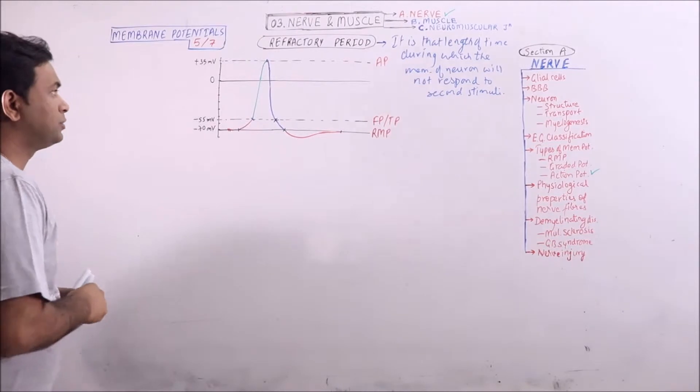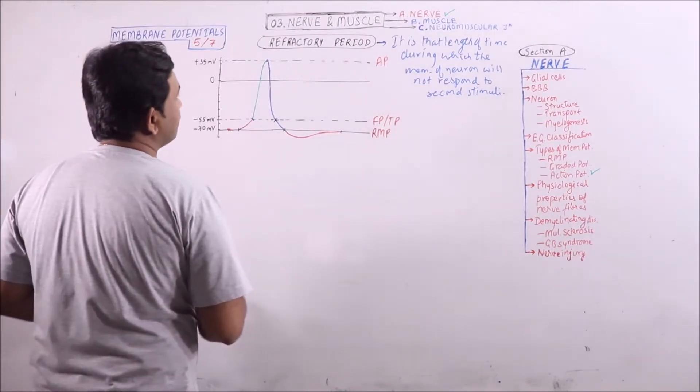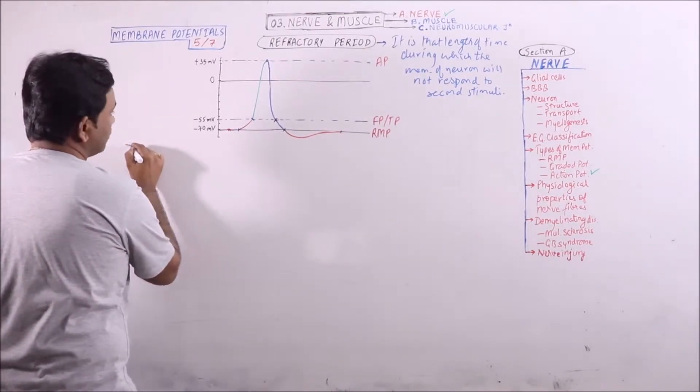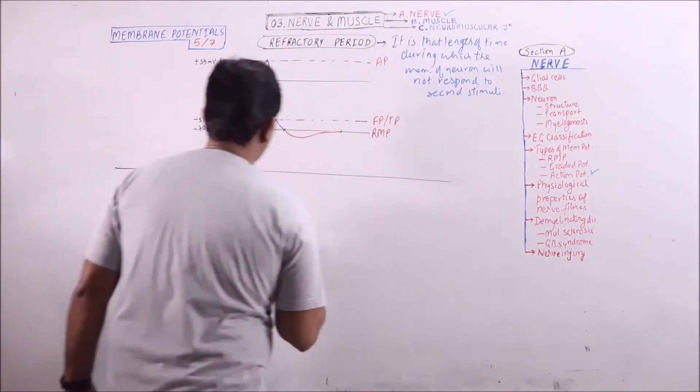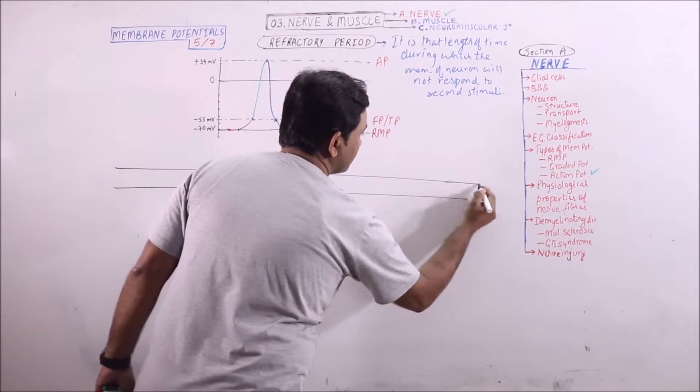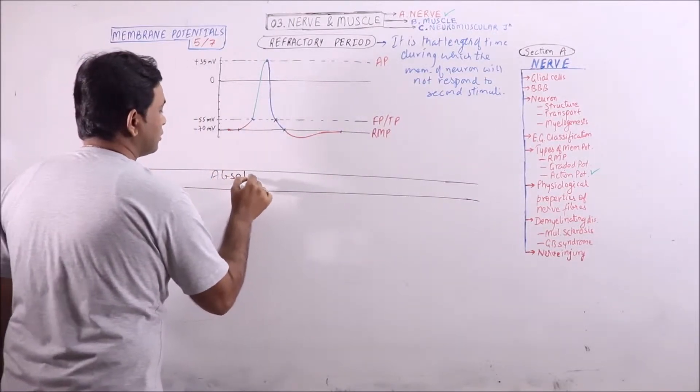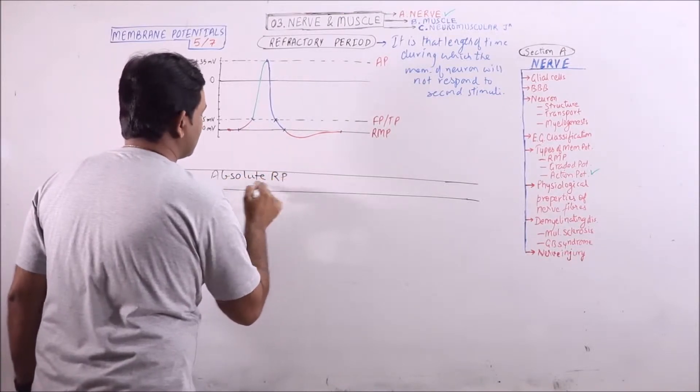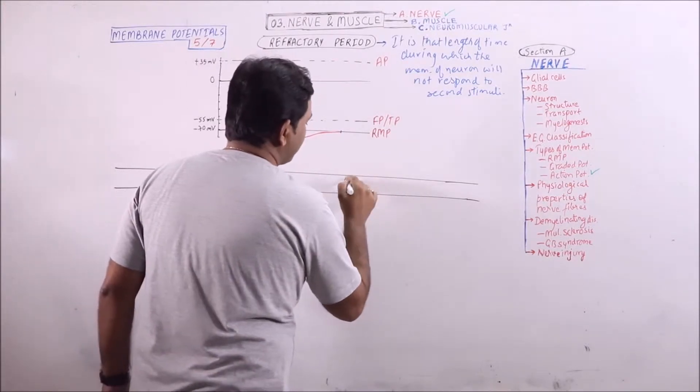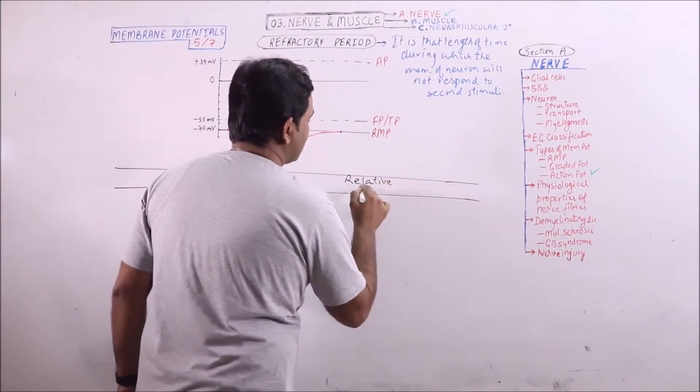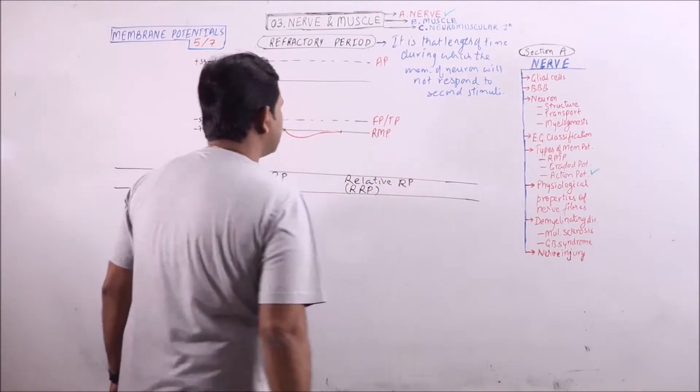This refractory period is basically divided into two types or two phases, that is absolute refractory period and relative refractory period. We will compare them, what is absolute refractory period, that is ARP, and relative refractory period, that is RRP.